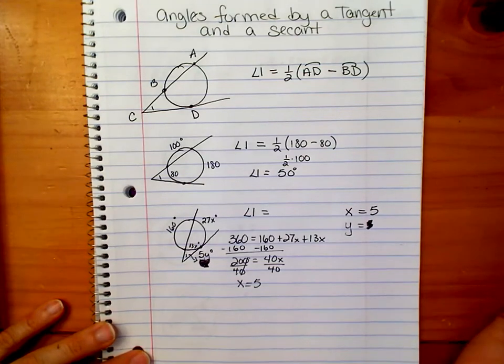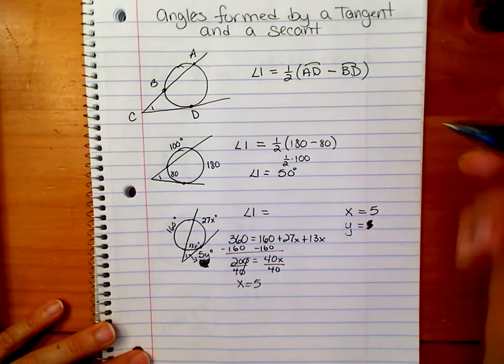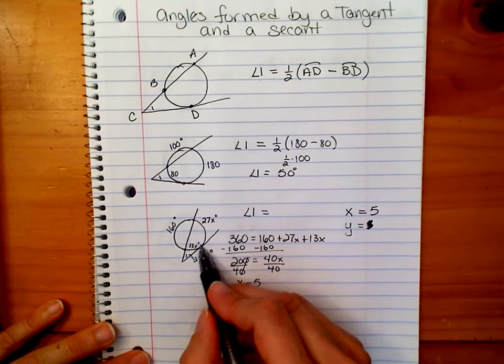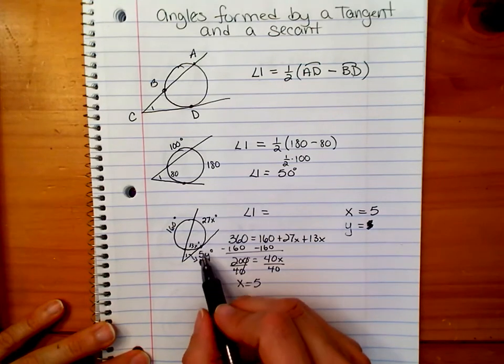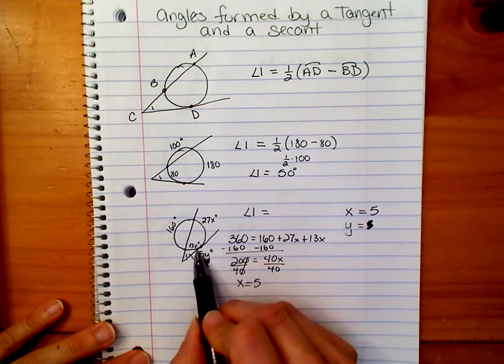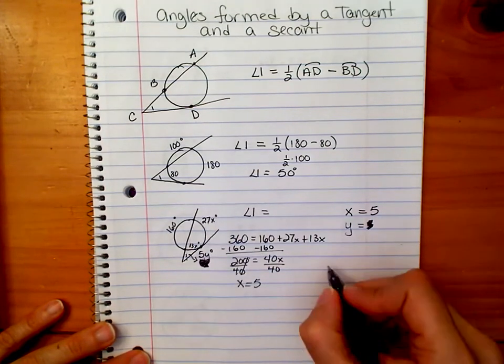So now is when we go back and use our tangent secant formula. So we know that this arc minus this arc divided by, I mean yes, divided by 2 equals angle 1. So let's find out what 27x and 13x are. Make it easier.